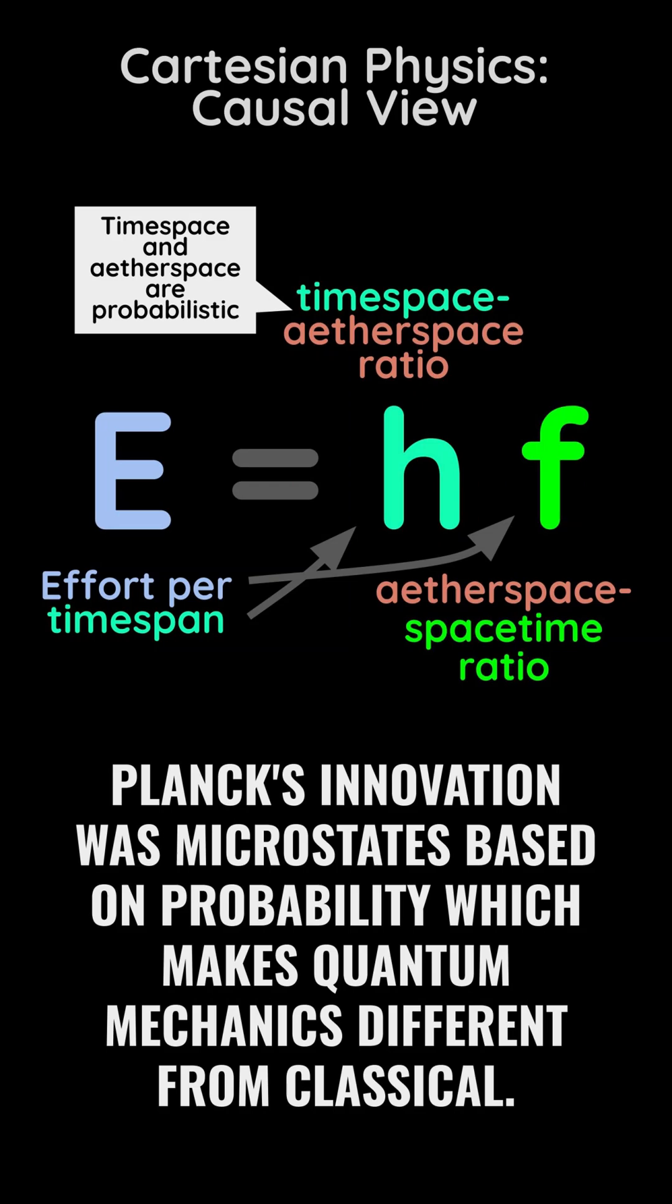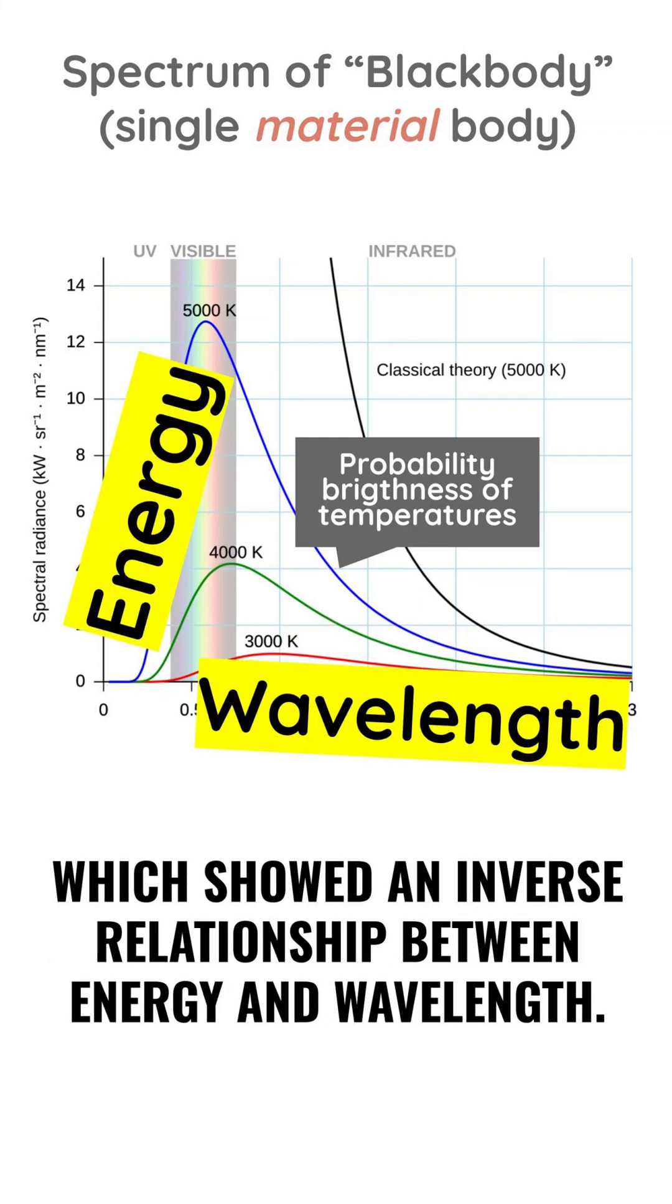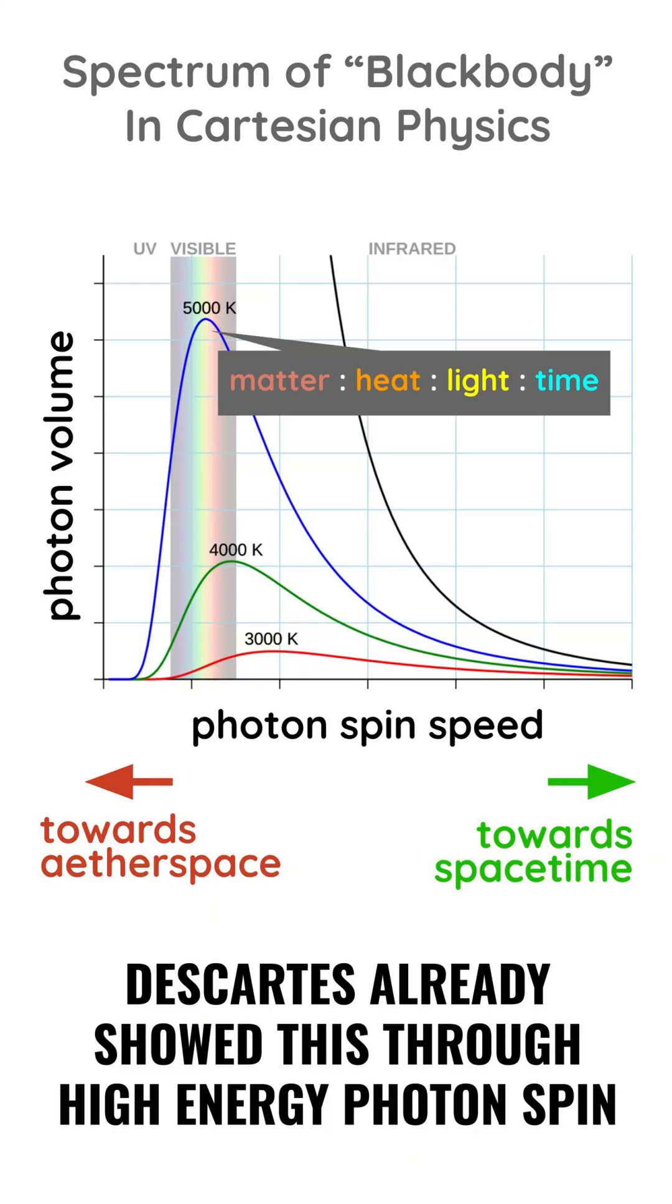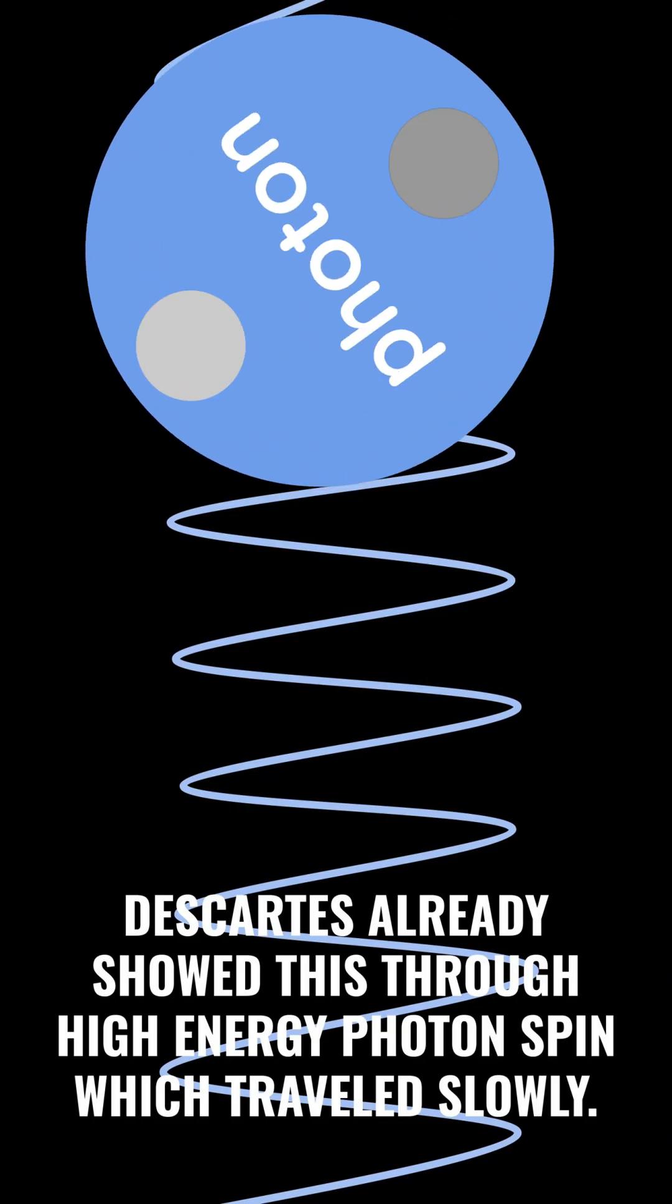Planck's innovation was microstates based on probability, which makes quantum mechanics different from classical. This was first used in the blackbody spectrum, which showed an inverse relationship between energy and wavelength. Descartes already showed this through high-energy photon spin, which traveled slowly.